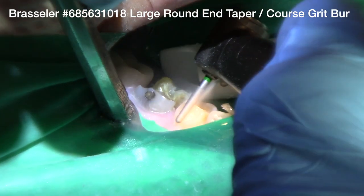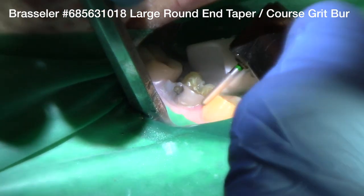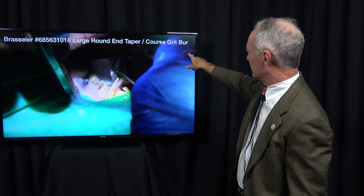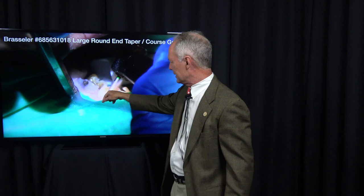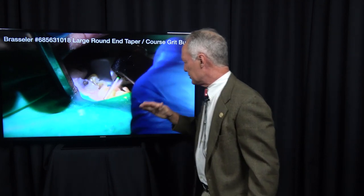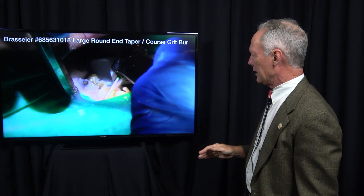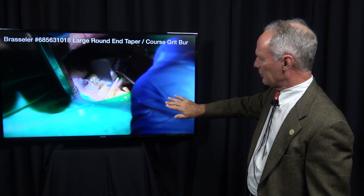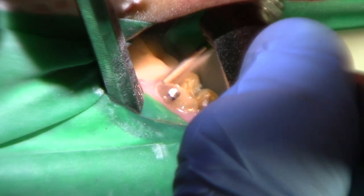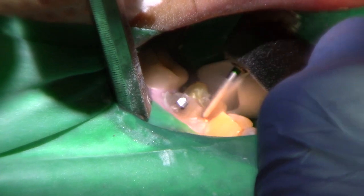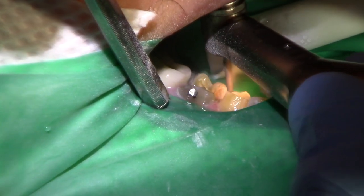This is the initial part of the preparation with the large, round-ended, tapered, coarse grit burr. It's a round-ended diamond, and I'm prepping just supragingivally with that burr. I want about a millimeter of preparation depth. Preserve all the tooth structure that you can, but be sure you have adequate reduction for your restoration.